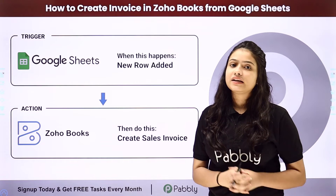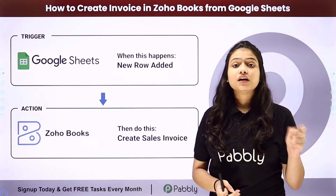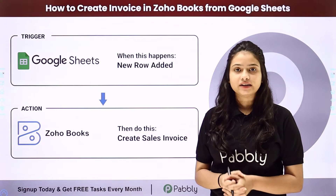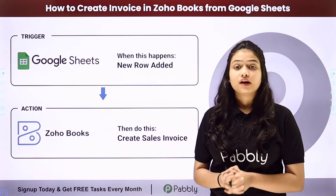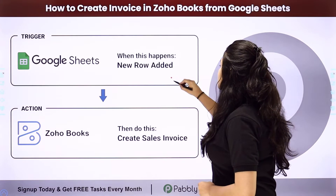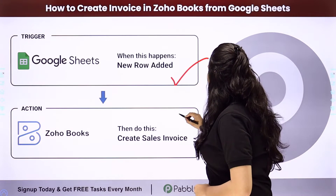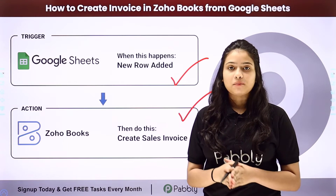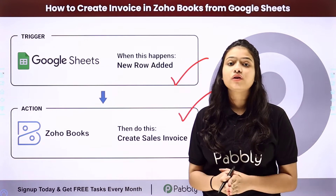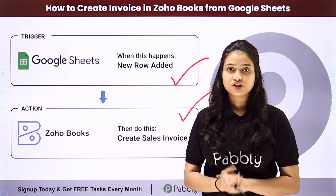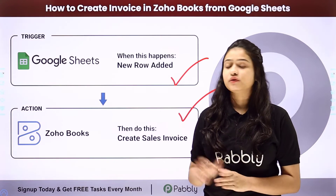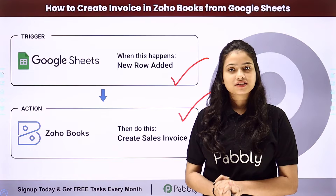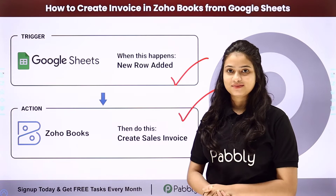And because they do not have any kind of native integration between them, therefore we are going to use Pably Connect which is an amazing automation and integration software. We have Google Sheets in our trigger and Zoho Books in our action. So we will be connecting both of them using Pably Connect in such a way that whenever a new row is added in Google Sheets, automatically a sales invoice will be generated in Zoho Books. To learn this entire automation step by step, let me take you all to my screen.